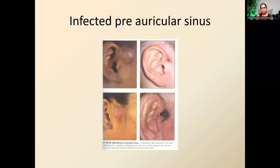Other infections around the ear include the preauricular sinus or auricular sinus — all congenital. We usually don't see the sinus opening; they present with infection, abscess, or localized redness and signs of inflammation. This needs acute management with antibiotics and pain relief. Once the infection settles, the sinus needs to be surgically excised; otherwise patients present repeatedly with infections because the underlying sinus has been missed as the cause.